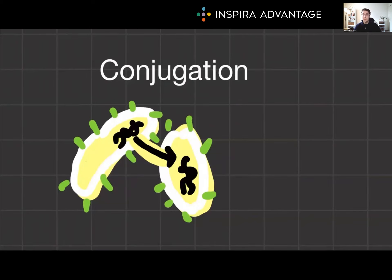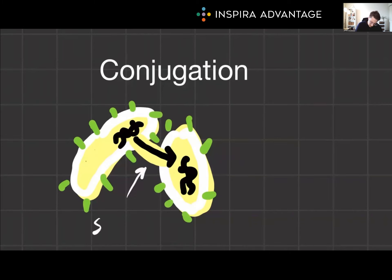My personal favorite is conjugation — think of this as bacterial handshaking or bacterial sex. Two bacteria form a connection, and one transfers a piece of its DNA to the other. The recipient can then integrate this DNA, leading to genetic recombination. Something the MCAT seems obsessed with is naming: the connection is called the sex pilus. This is definitely an Anki card you'll want — a great screenshot to take right now.